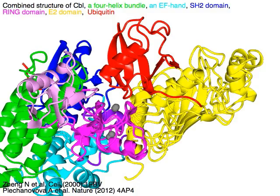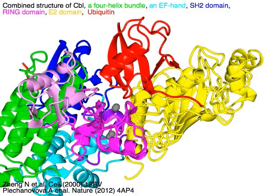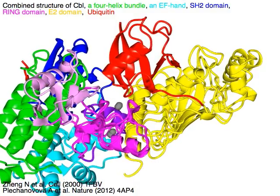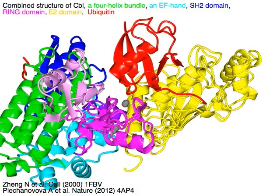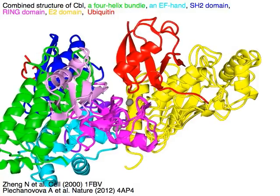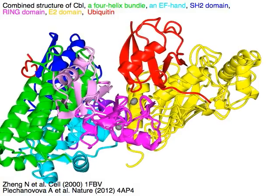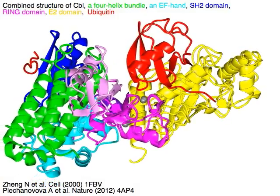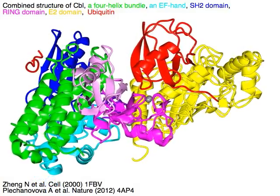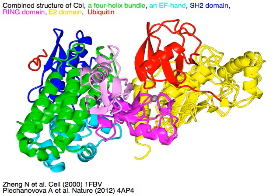Combined structure of CBL showing the 4-helix bundle in green, the EF hand in cyan, the SH2 domain in blue, the ring domain in magenta, the E2 domain in yellow, and ubiquitin in red.